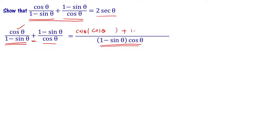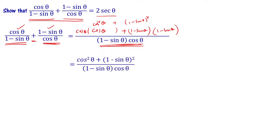Writing 1 − sinθ in the numerator, and combining over the common denominator (1 − sinθ) into cosθ, we get: cosθ plus (1 − sinθ) whole squared, divided by (1 − sinθ) into cosθ.